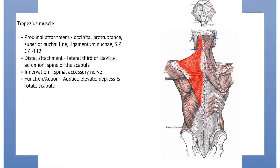And finally the spinous processes of C7 to T12. This muscle attaches to the lateral third of the clavicle, the acromion, and the spine of the scapula, which is very well demonstrated in this diagram. This muscle is innervated by the spinal accessory nerve. Its function or action is to adduct, elevate and depress, as well as rotate the scapula.